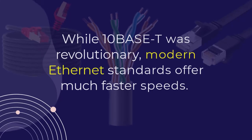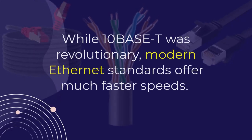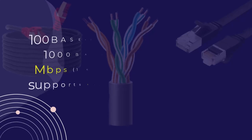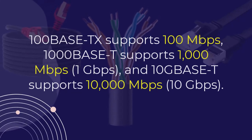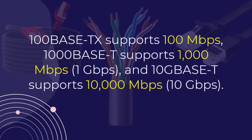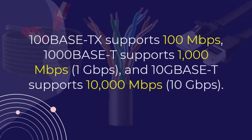While 10BASE-T was revolutionary, modern Ethernet standards offer much faster speeds. 100BASE-TX supports 100 megabits per second. 1000BASE-T supports 1000 megabits per second, or 1 gigabit per second. And 10GBASE-T supports 10,000 megabits per second, or 10 gigabits per second.